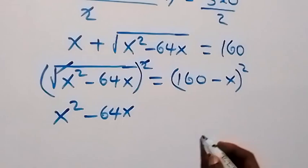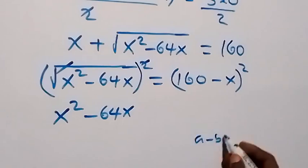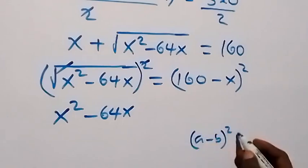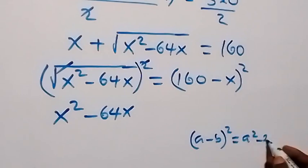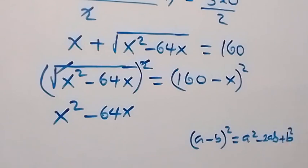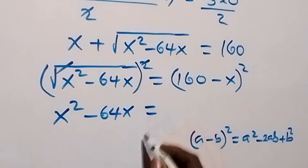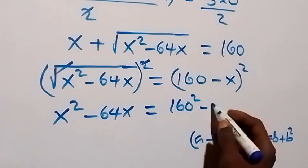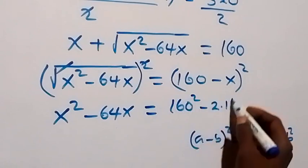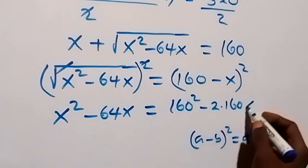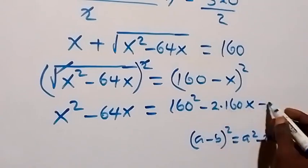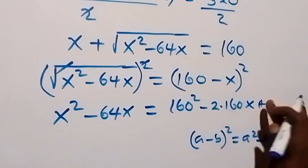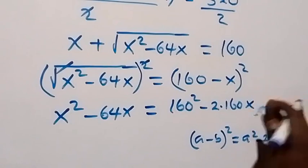The right side follows from (a − b)² = a² − 2ab + b². Applying this gives 160² − 2(160)(x) + x², which is 160² − 320x + x².